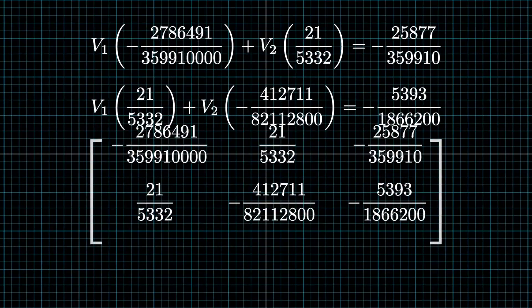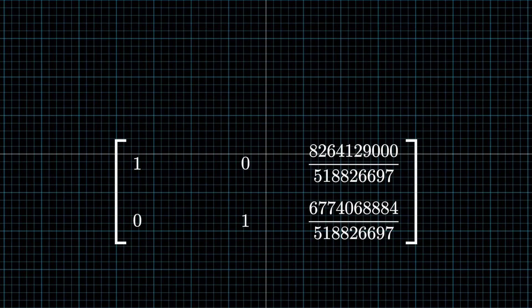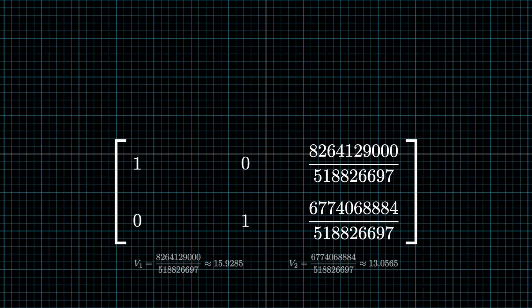We put it into a matrix, take the reduced row echelon form, which if you don't know how to do that, I also will link it into the description. But yeah, that's what we get, a crazier looking fraction. So that's V1 and that's V2 respectively.